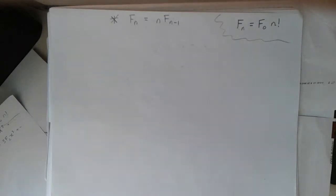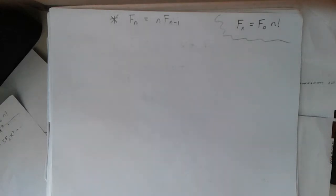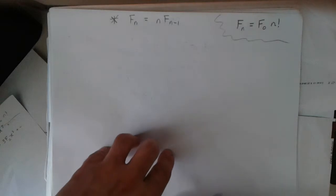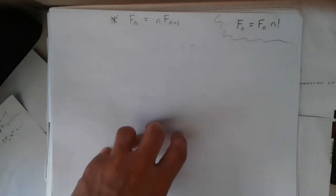The reason I'm coming back to this example is just because it illustrates something about generating functions that my previous examples didn't — and that is, how do you choose a generating function?